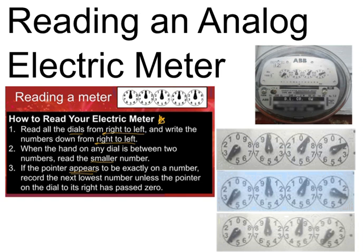So let's take a look at the first set of dials. Following our first step, it says read all the dials from left to right and write the numbers down from right to left. So here we've got our first dial on the complete left-hand side. I'm going from left to right. It's between one and two. It says when the hand on any dial is between two numbers, read the smaller number. Now thinking about like a clock face that is almost at the number two, but it's not quite there yet. So this is going to be one.